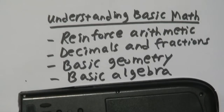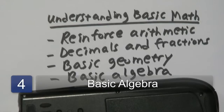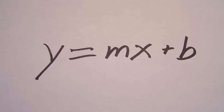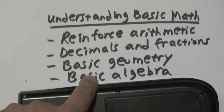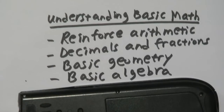And lastly, if you know you're going on to a higher math course, or if you're majoring in something that requires advanced math, one thing to help understand basic mathematics is to understand basic algebra — whether it be solving simple equations, understanding what variables are, or maybe a little bit of exponent knowledge. But before you get to this step, it's very important that you get the three above — the arithmetic, the decimals and fractions, and the basic geometry — before plunging into basic algebra. But these are a few strategies to help you get started, and I'm Jimmy Chang, and that's how you understand basic mathematics.